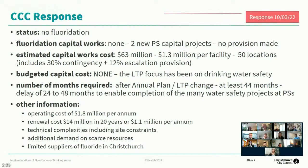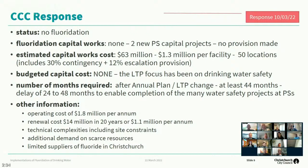Our response to the Ministry of Health was aligned with the specific questions asked in the letter. Firstly, to confirm that Christchurch does not currently add fluoride to its drinking water, nor do we have any projects underway to add fluoride. The estimated capital costs to add fluoride at 50 locations is in excess of 60 million dollars, and this estimate includes a 30% contingency and a 12% escalation allowance. The long-term plan does not provide for fluoridation at present. We believe that once funding is in place, it will take at least three and a half years to complete implementation. We have advised the Ministry that a delay of two to four years should be considered to allow us to complete our water safety projects, and because we cannot work on our pump stations simultaneously.